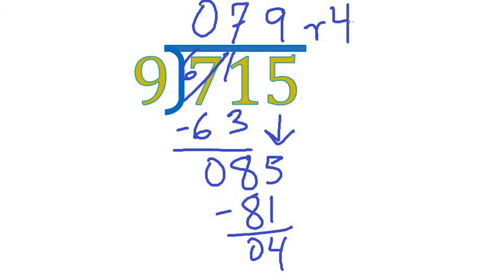In later grades, later lessons, you will use this remainder in a different way to show it as a fraction answer. But for now, the remainder is enough, so we have 79 remainder 4 as our quotient.